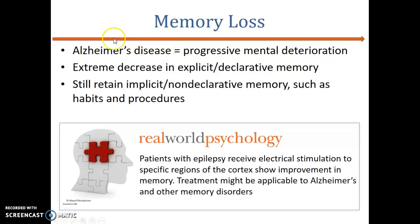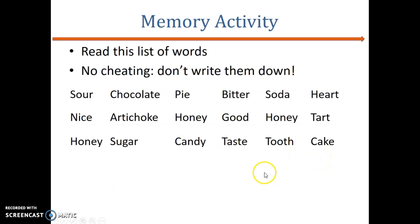Alzheimer's is a neurologically degenerative condition that impacts and decreases the conscious, explicit part of our memory. However, there are cases where implicit memory is retained because the hippocampus area is not heavily used in implicit memory — it is more procedural in nature.